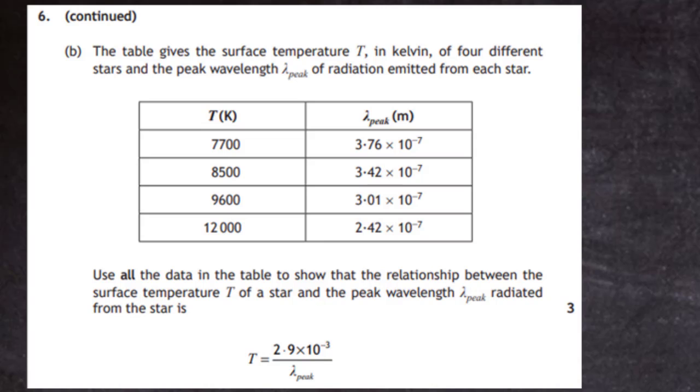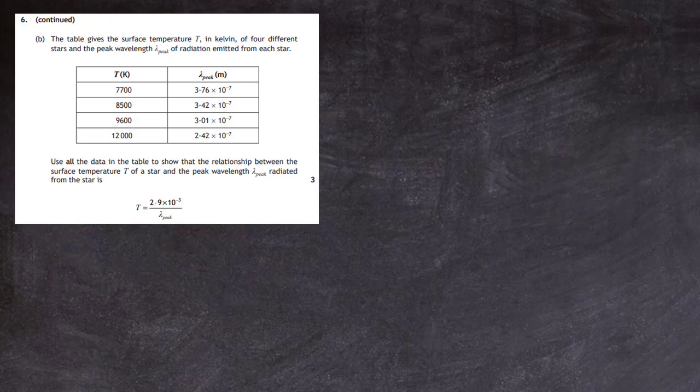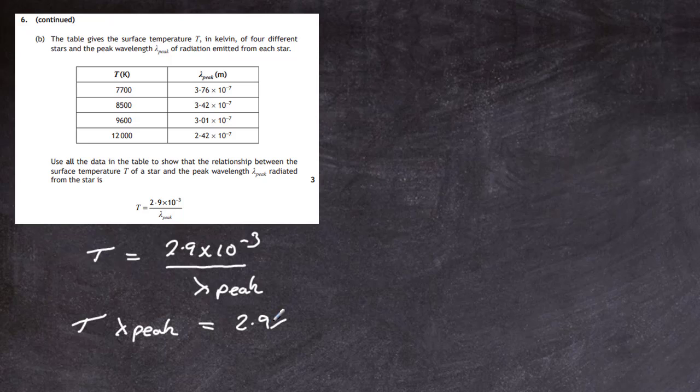Let's put it into some form that we can actually work with. We start off with T, the surface temperature of the star, is equal to 2.9 times 10 to the minus 3 divided by lambda peak. That's our equation there. Now if we cross multiply, we'll have T times lambda peak, and that's going to give us the value of 2.9 times 10 to the minus 3.